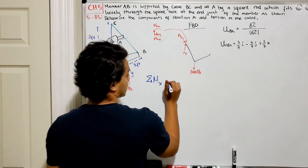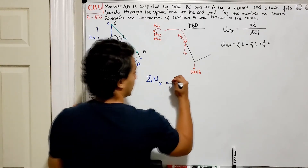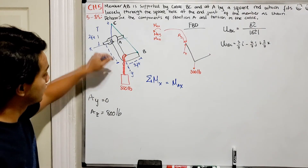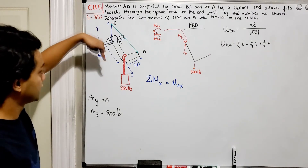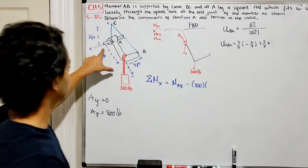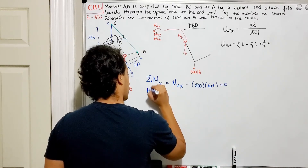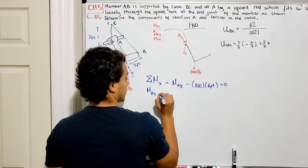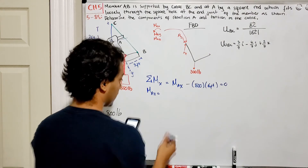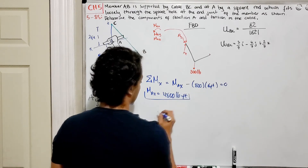For the sum of moments about the x-axis: TBC is zero so it doesn't contribute. We have the moment reaction MAx, and the 800-pound load acting downward is the only perpendicular force. It acts clockwise, so it's negative: MAx − 800 × 6 = 0, giving MAx equal to 4800 pound-feet. That's our first moment reaction.